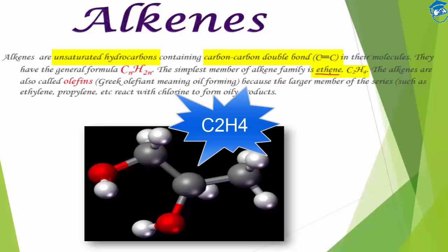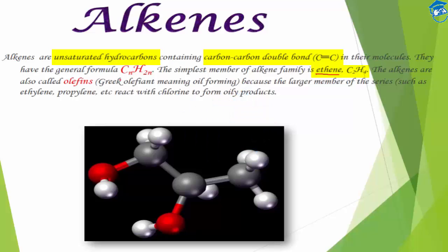Just put the value n equals 2 and you will get it. So whenever you need to find any member, just put the value of n and accordingly you will get the member of the alkene family.